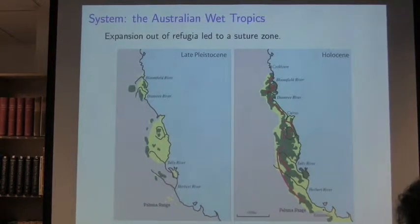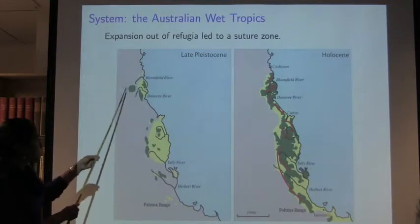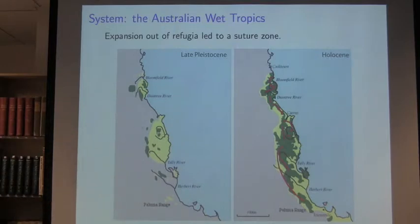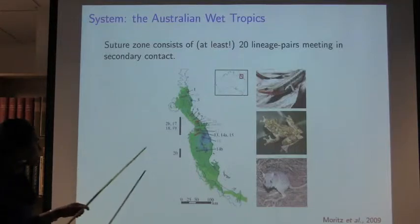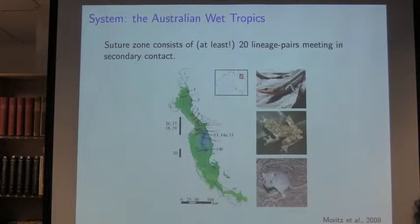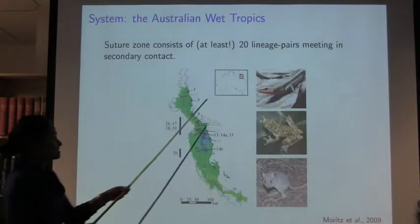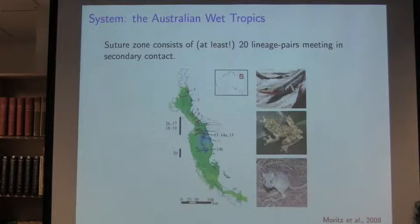Since the last glacial maximum, 3,000 to 8,000 years ago, expansion out of these refugia led to suture zones. Populations expanded out of the north and south and met in spatially clustered hybrid contact zones. This suture zone consists of at least 20 lineage pairs meeting in secondary contact. Each red line in the figure represents one zone of secondary contact between lineages within a morphospecies. There's great taxonomic breadth — lizards, frogs, marsupials, and even plants show the same break.